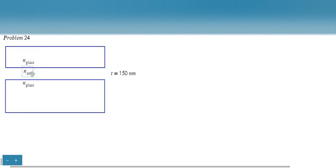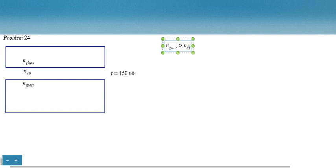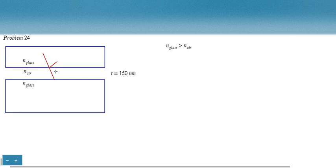Here we have N_glass, N_air, N_glass. The refractive index of glass is greater than the refractive index of air. So as light comes from the glass, the majority gets transmitted, but then there's a portion that gets reflected. Since we're going from a higher refractive index to a lower one, there is no phase shift associated with this reflection.